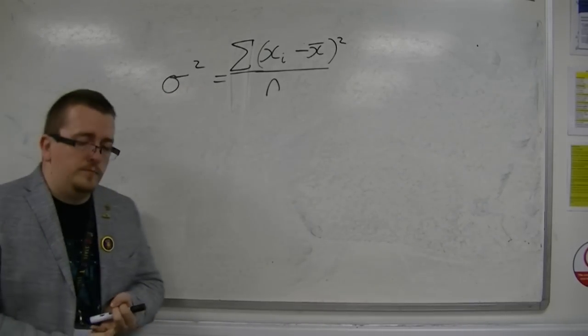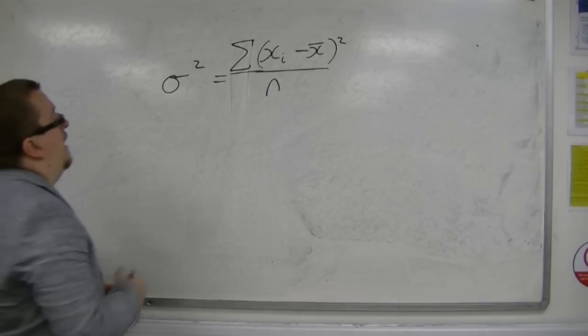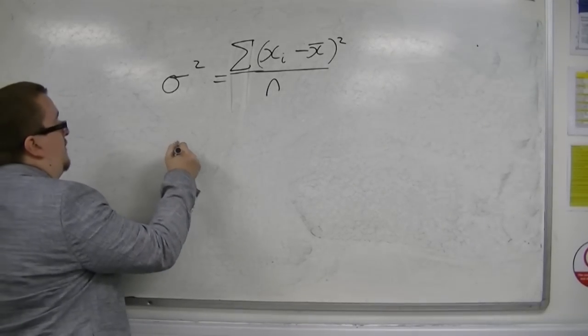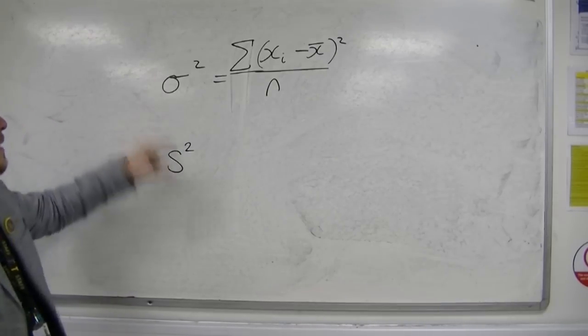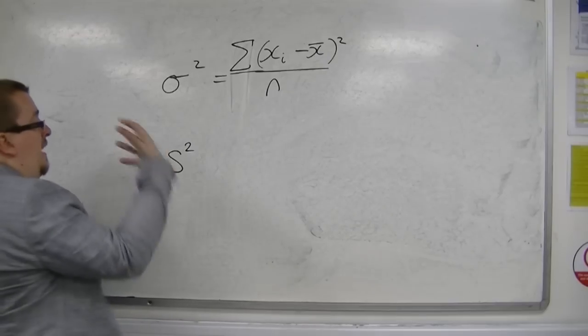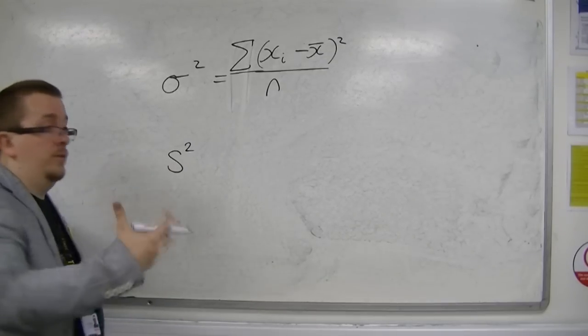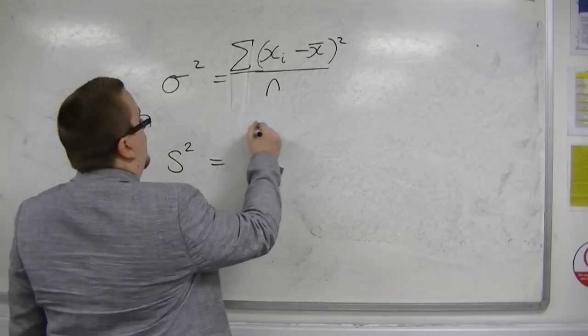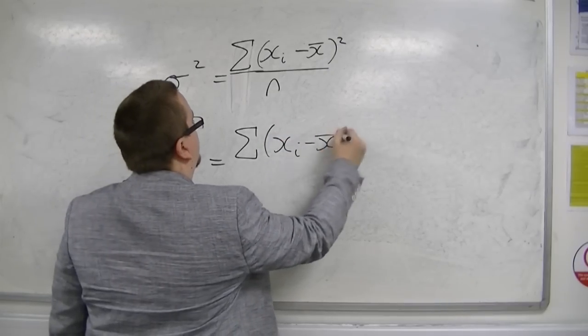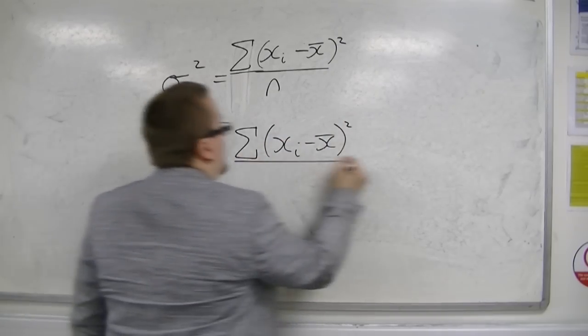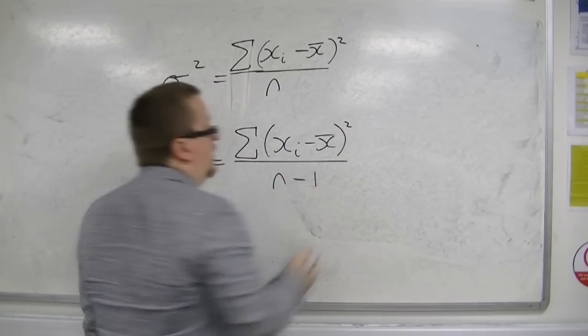And so, an unbiased estimator can be found by, instead of writing sigma squared, I'm going to write s squared for the unbiased estimator for the variance. And the calculation looks very much the same, but instead of dividing by n, we divide by n minus 1.